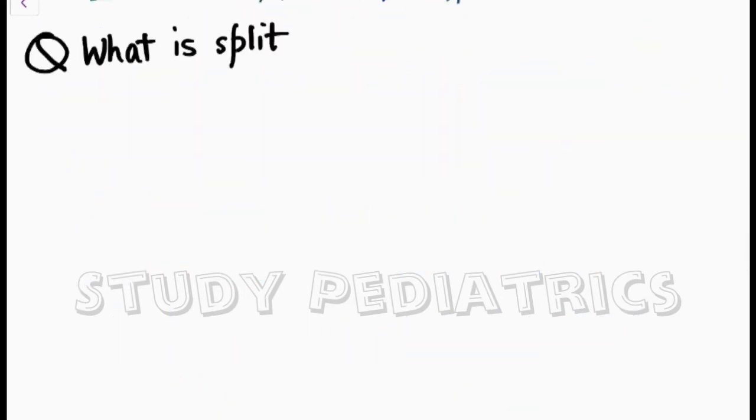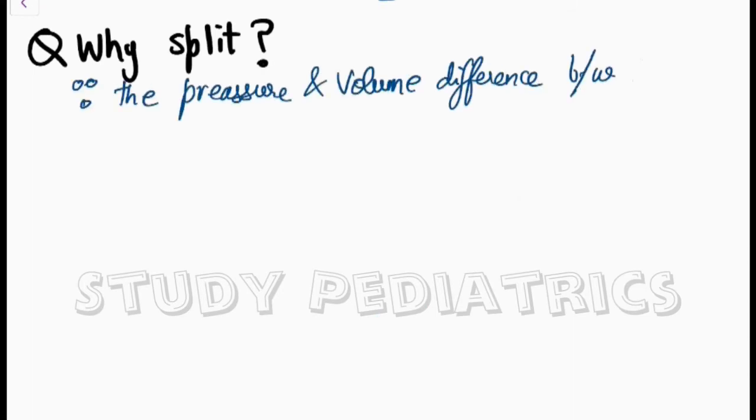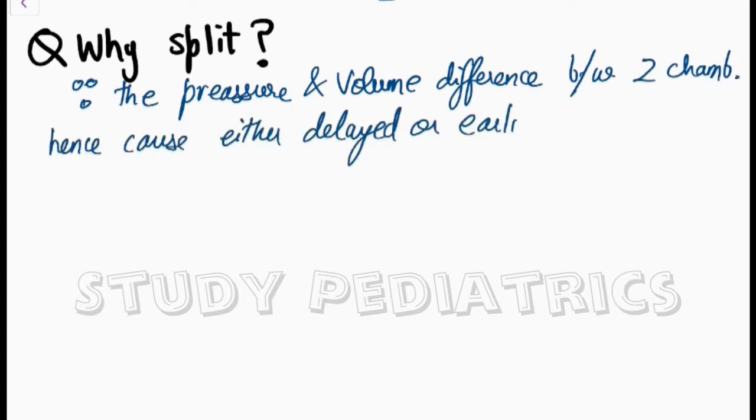But what is split? As you can see here, the heart has two sounds, S1 and S2. The S2 sound has a physiological split into A2 and P2, because of pressure and volume differences between the two chambers causing either delayed or earlier closure of valves, producing two different sounds as split.